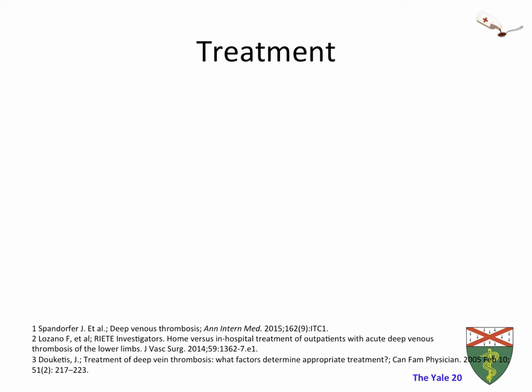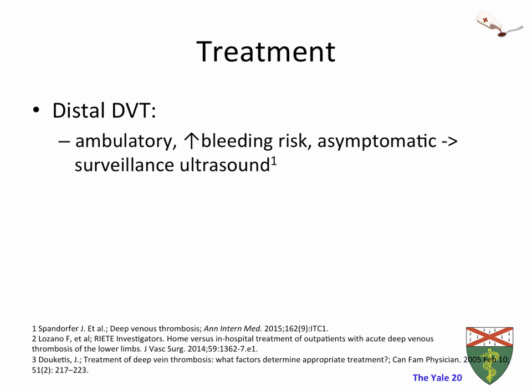After spending a significant proportion of this talk on diagnosis, let's switch gears and talk about treatment. For distal DVT, some studies have suggested that you do not need to treat them at all and can just follow these patients with serial ultrasounds — though that's still an evolving field. You can consider observing these patients if they are asymptomatic, ambulatory, or if they have an increased risk of bleeding and you do not feel confident starting them on anticoagulation.